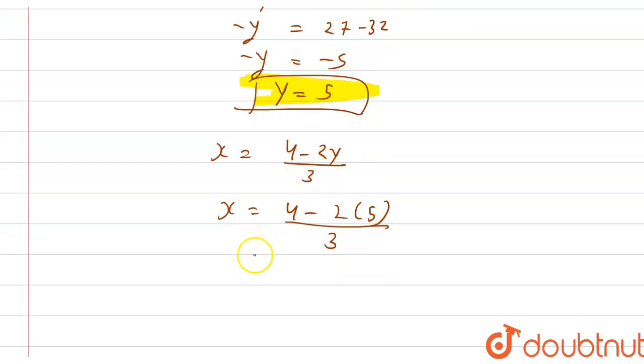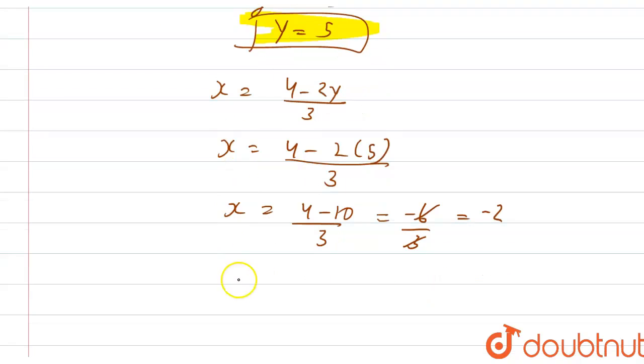Now x will be equal to 4 minus 10 divided by 3, that is minus 6 by 3, that is equal to minus 2. So from here we are getting x equals minus 2.